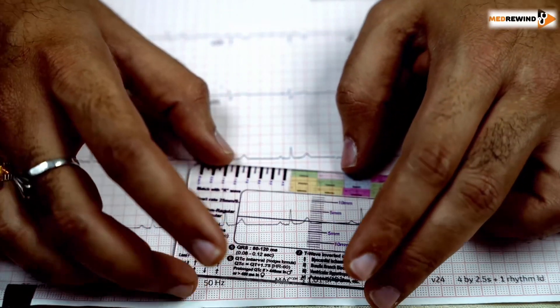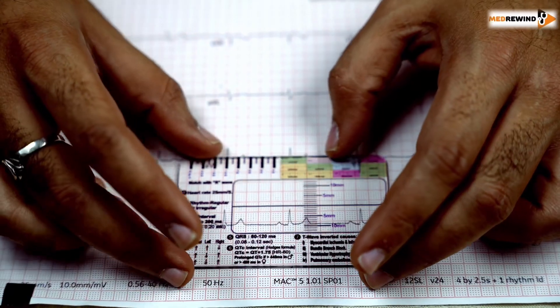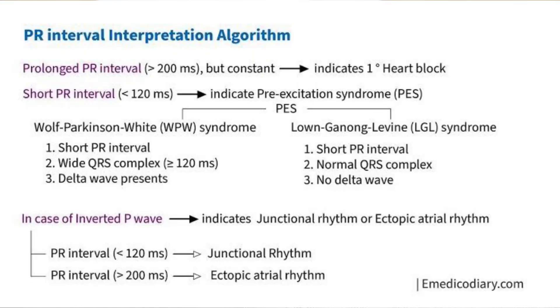The third step is to see whether the PR interval is normal or not. The normal PR interval is 0.12 to 0.20 seconds.